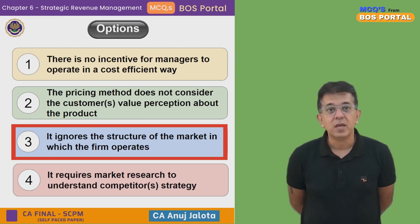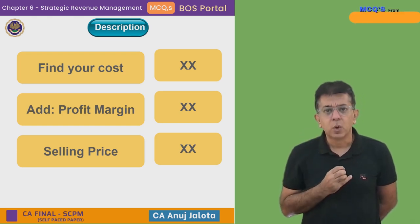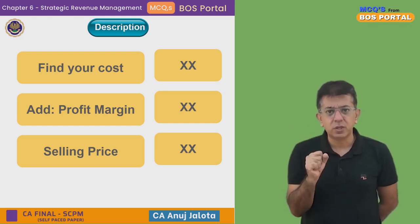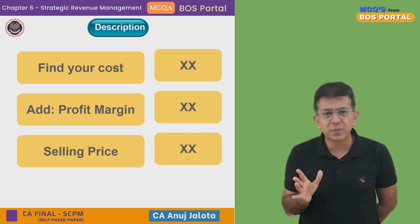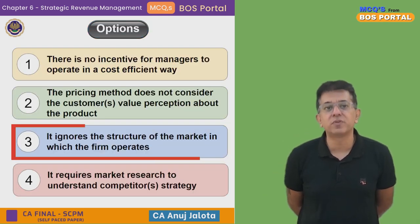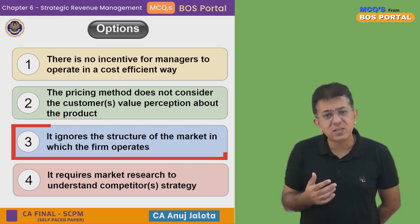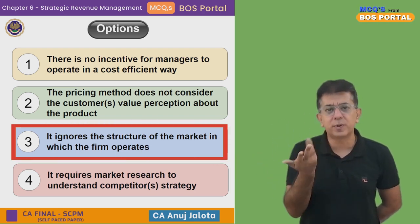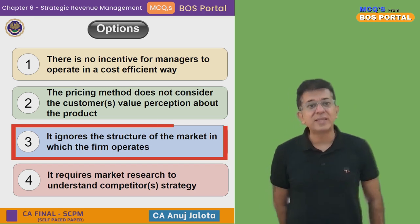Option 3: It ignores the structure of the market in which the firm operates. This is also a drawback. Suppose the industry average cost is 90 rupees but you were inefficient and your cost is 100. You add your profit margin and fix the selling price, but the customer won't accept it. If there is heavy competition in the market you need to bring prices down; if there is less competition you can charge more — but cost-plus pricing ignores all of this and simply says: this is my cost, this is the profit I want, so this is the price.